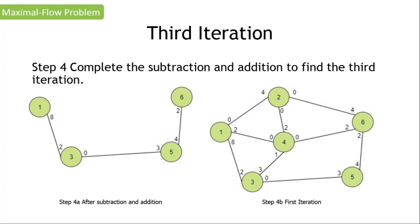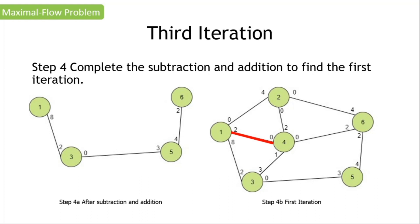Going back to the question: can we find any other path that has no zero flow capacity going from a source node to a sink node? Let's find out. One to two is not a path since it has a zero flow capacity. Path one to four is available, four to two is available, but two to six is not available. One to four available, but four to six is not available. One to three available, but three to five is not available. As you can see, we cannot find any other path that has no zero flow capacity.